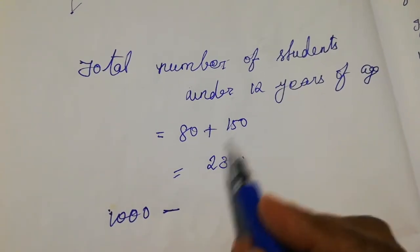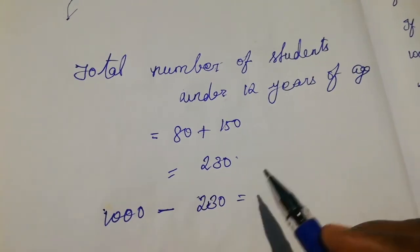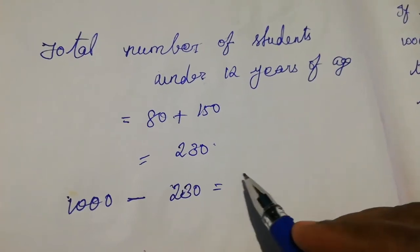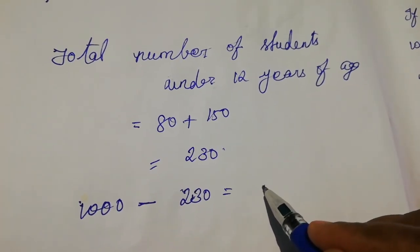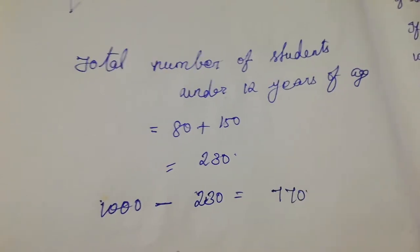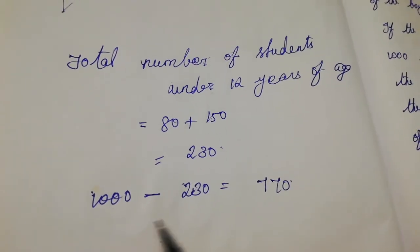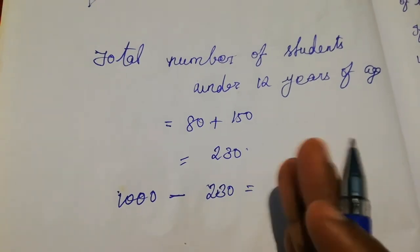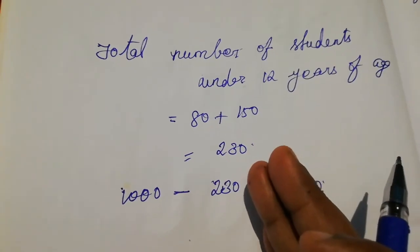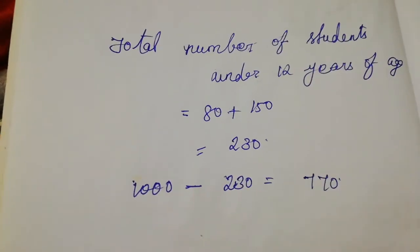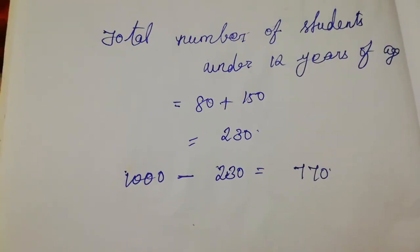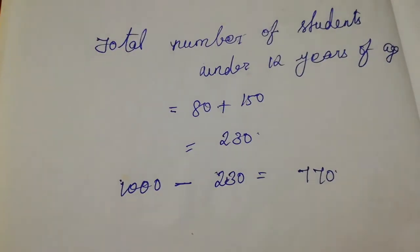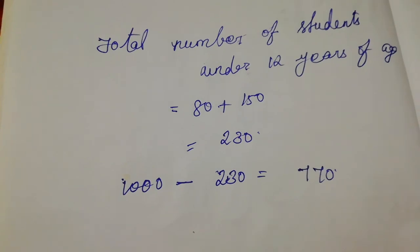Total number of students is 1000. Below 12 years is 230. So remaining are 12 years and more. That is 1000 minus 230, which is 770. So 770 students are 12 years and more than 12 years of age. If you like this video, give thumbs up, share with your friends, and subscribe to the channel. Thanks for watching!